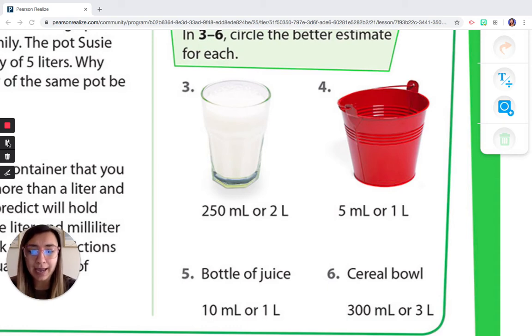So what it wants us to do is circle the better estimate for each liquid or measure of liquid. So the first thing that we have is it looks like a glass of milk. Now do we want to pick milliliters, the little droplet full of water, or do we want to pick liters? So here it says 250 milliliters we have to choose from or two liters. If we think back, the water bottle was one liter, one of those big water bottles, or you can think of a big soda bottle that you would share with your family. To me, that is way too big. Way, way too big.